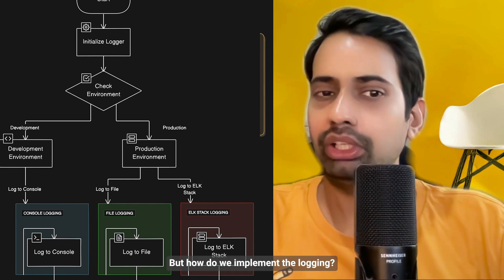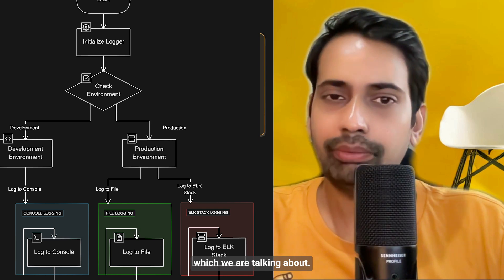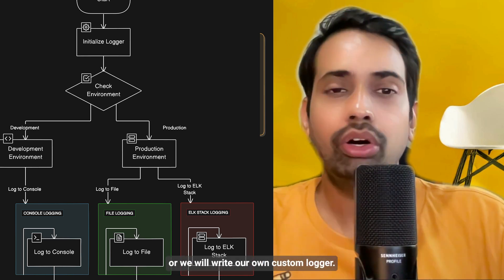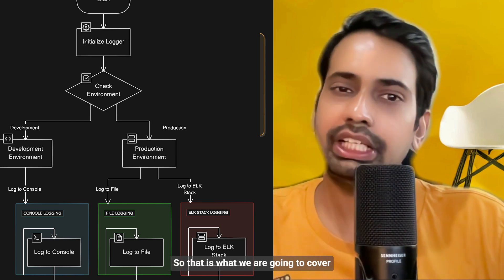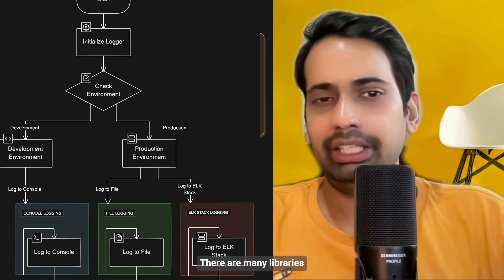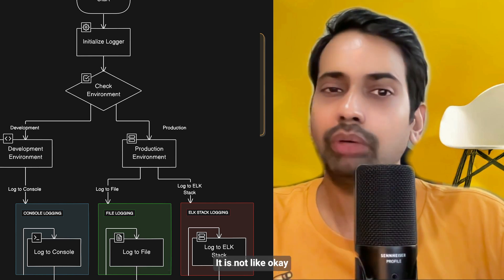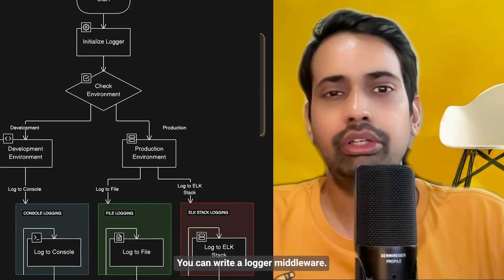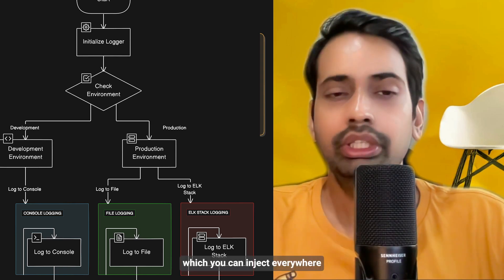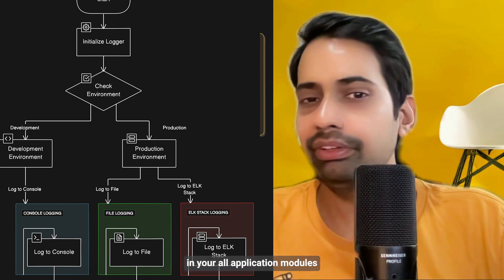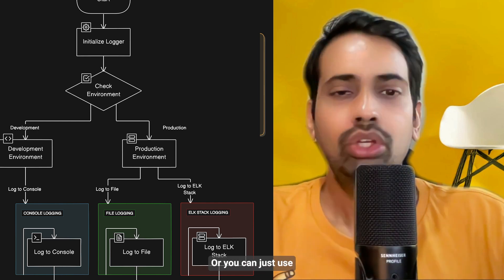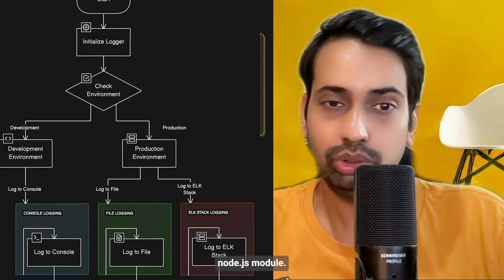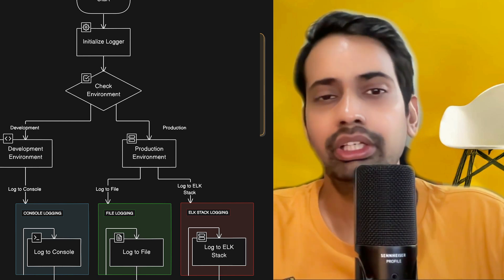How we implement logging is the second part we're covering. We'll talk about the NestJS built-in logger, and also write our own custom logger. There are many libraries and we'll talk about a couple of them. You can write a logger middleware, a simple logger module you can inject everywhere across your application modules, or you can write simple verbose/error/debug logs using the debug npm package.